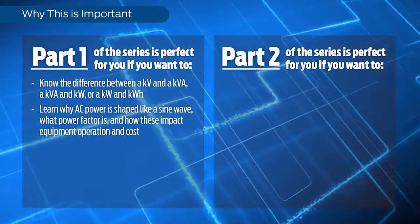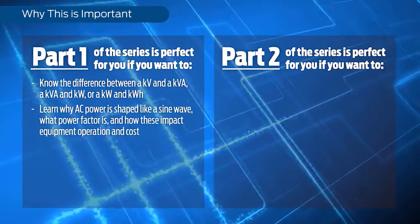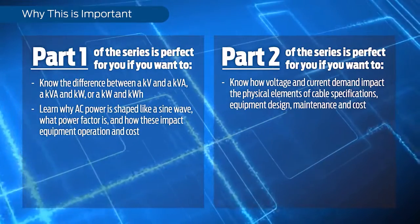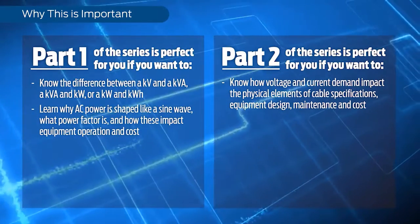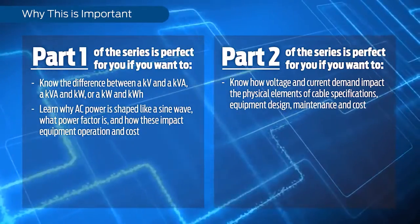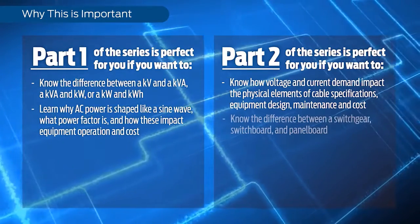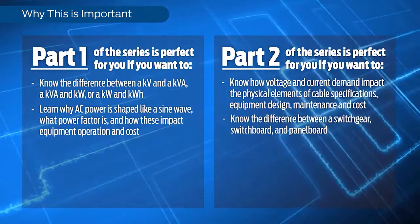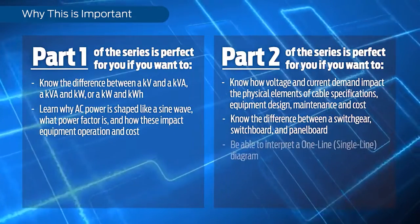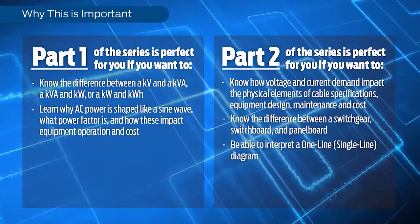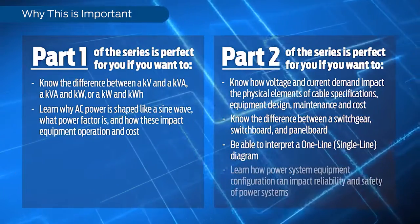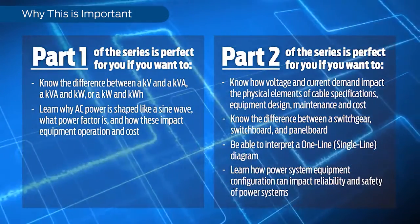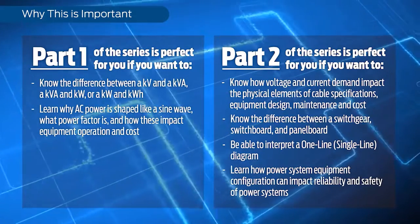Part 2 of the series is perfect for you if you want to know how voltage and current demand impact the physical elements of cable specifications, equipment design, maintenance, and cost. Know the difference between a switchgear, switchboard, and panel board. Be able to interpret a one-line, single-line diagram, and learn how power system equipment configuration can impact reliability and safety of power systems.